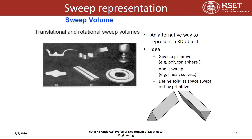Sweep representation includes translational and rotational sweep volumes. It is an alternative way to represent a 3D object. The idea is that we have a given primitive and a sweep — either linear or curved — and define the solid as the space swept out by the primitive.